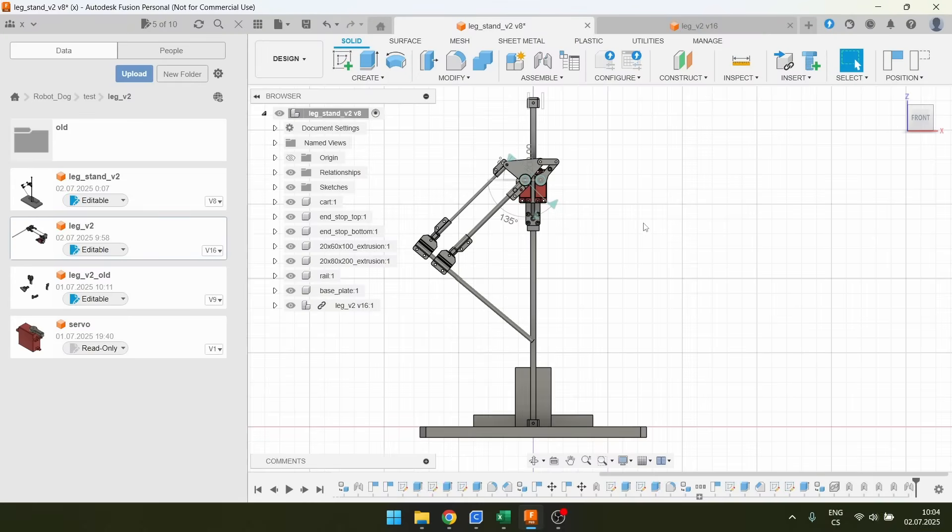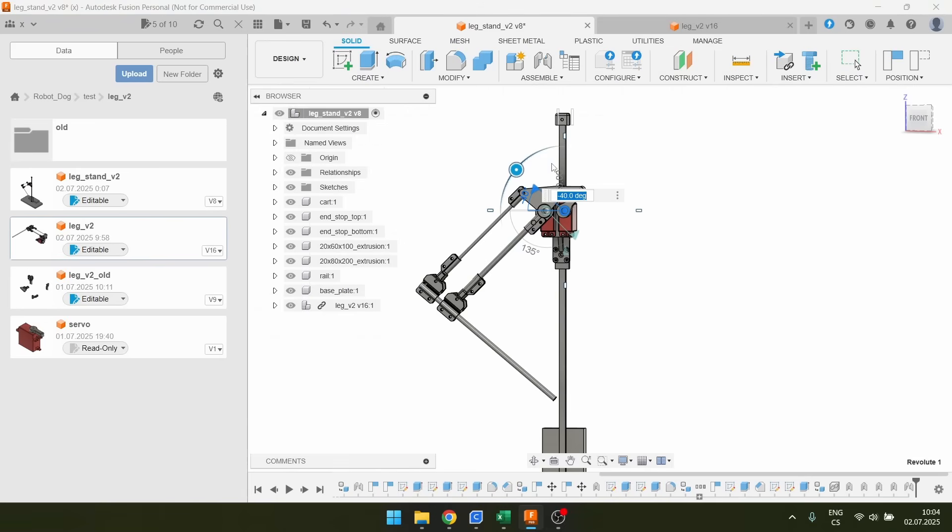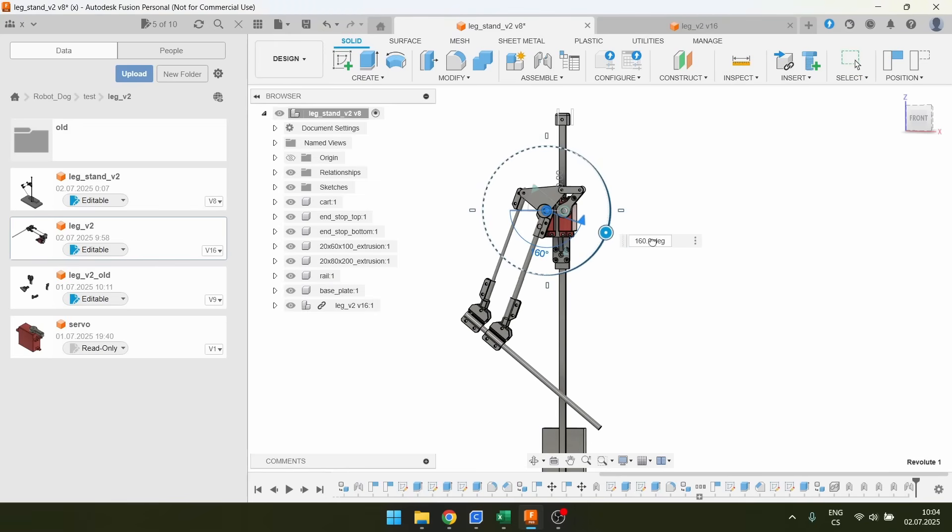This is what the new leg mechanism looks like in CAD. You can move one joint with this servomotor and you can move the other joint with this one. As you can see, if I move this servomotor, the second joint moves as well.